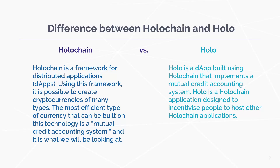First, we're going to talk about the difference between Holochain and Holo. Holochain is a framework for creating distributed applications, or dApps. Using this framework, it is possible to create cryptocurrencies of many types. The most efficient type of currency that can be built on this is a mutual credit accounting system, and that's what we're going to be looking at today.